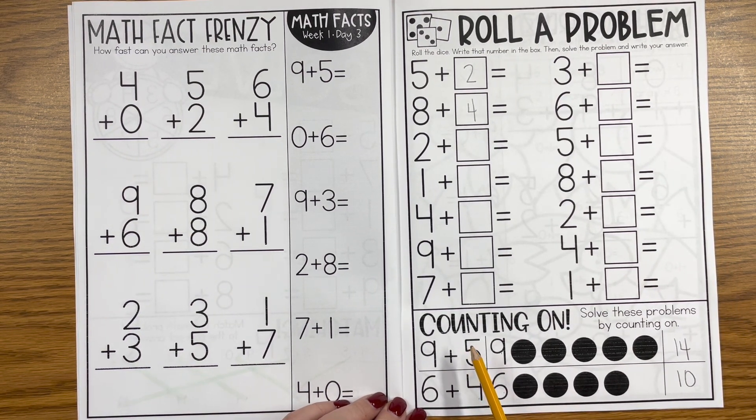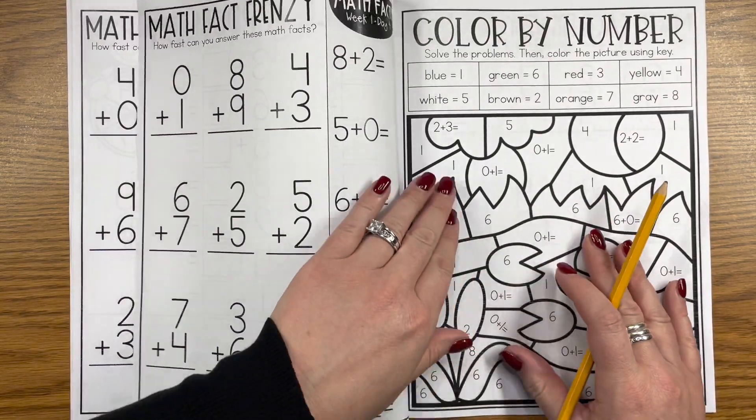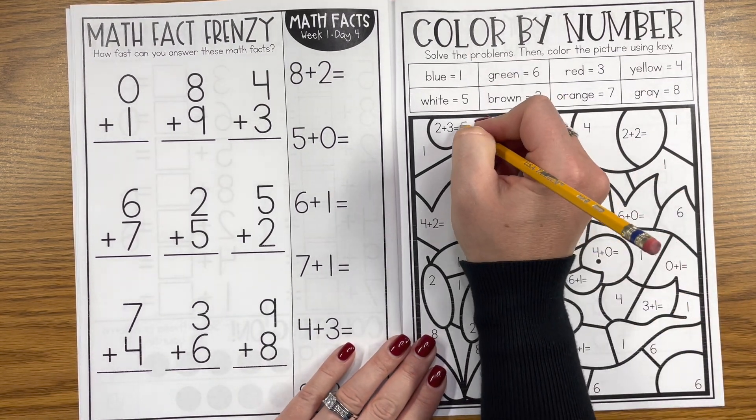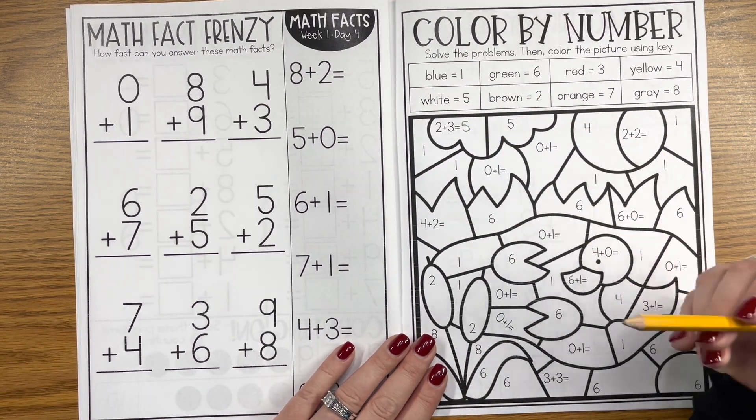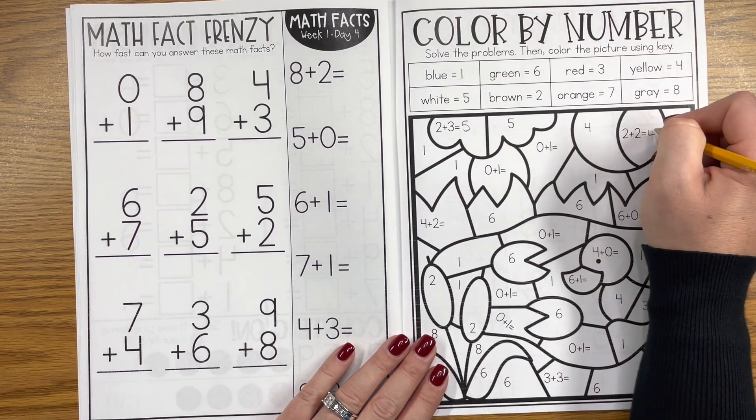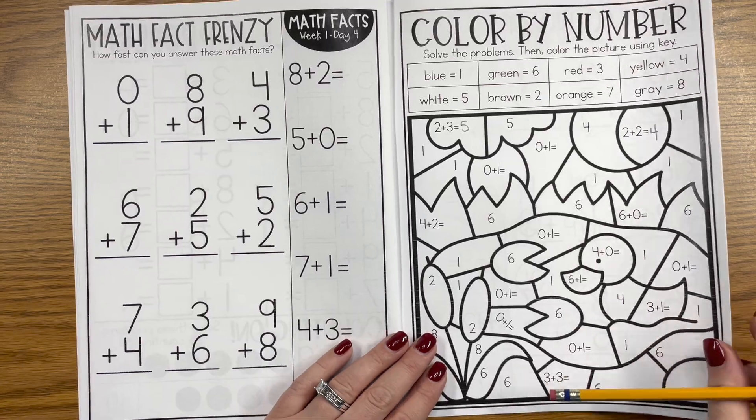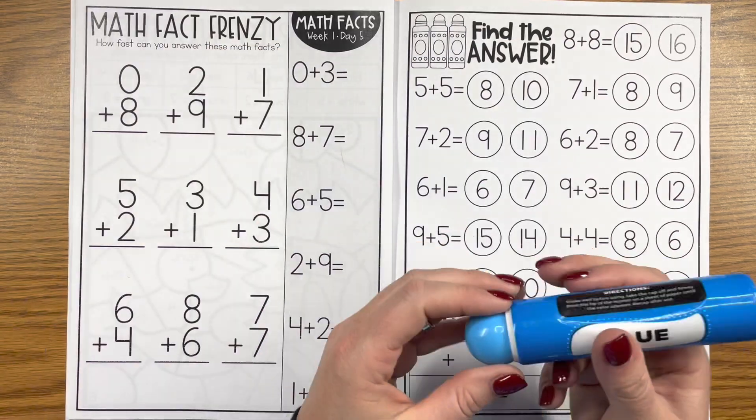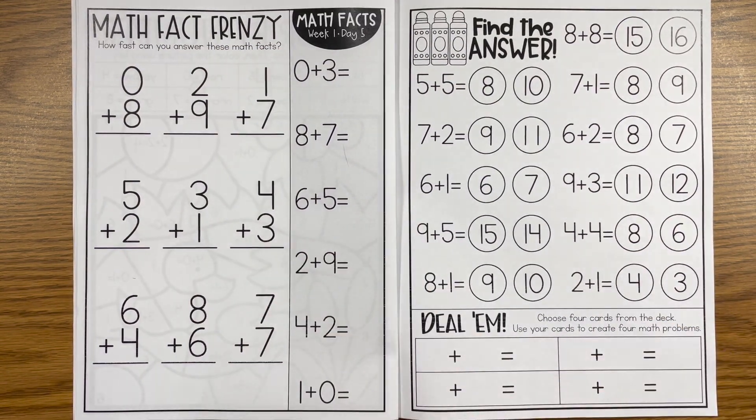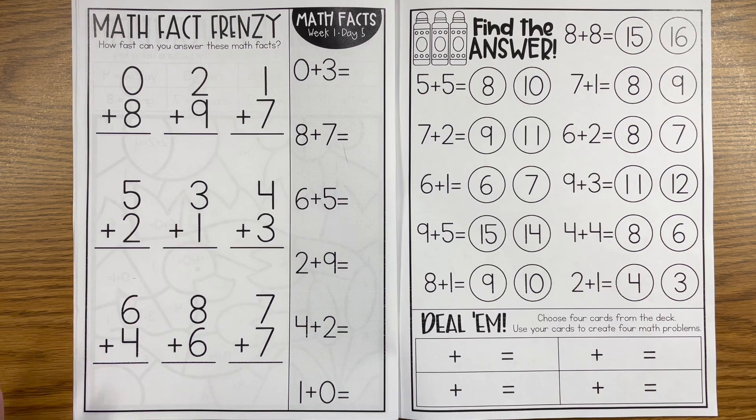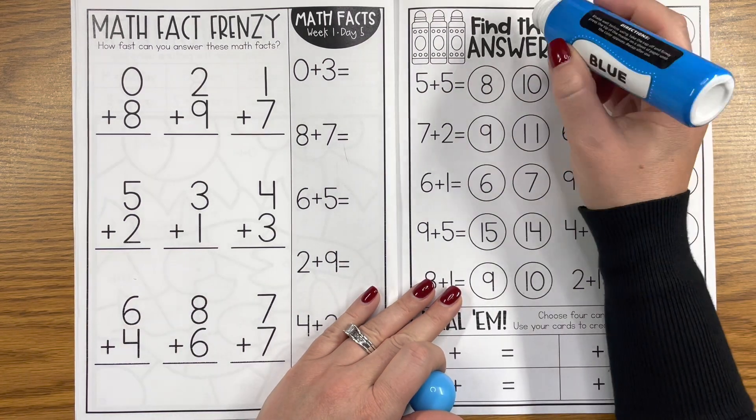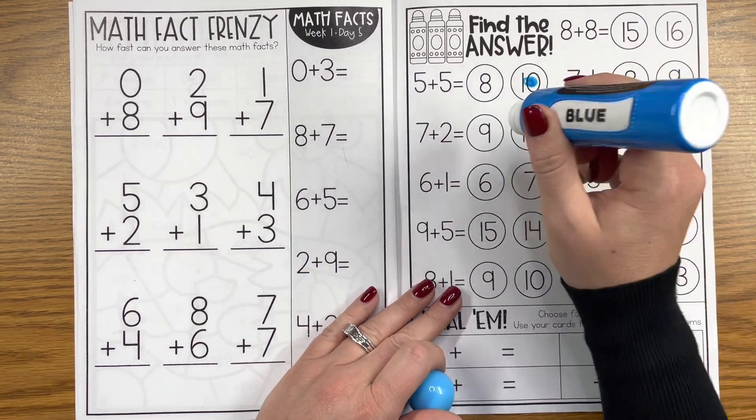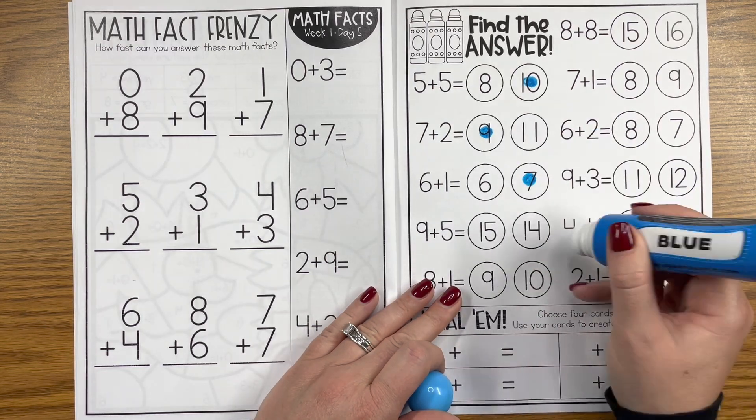On day four we're gonna do a color by number, so students will solve the problems and color in, or in this case we're gonna leave it blank because it's white, color in according to the color. Day five is always a favorite for my students where we use our bingo daubers. We are going to use our hundreds chart, our number line, touch points, fingers, whatever strategy you want and find the sums. It's been a while since I've used my bingo dauber to daub the sums. This is always a favorite, they love that.